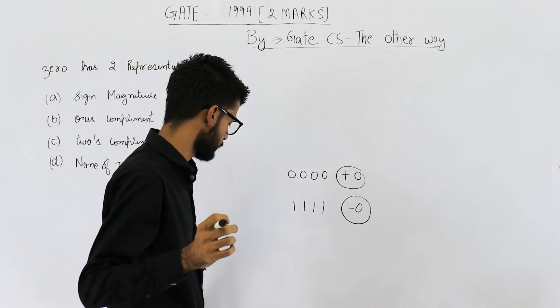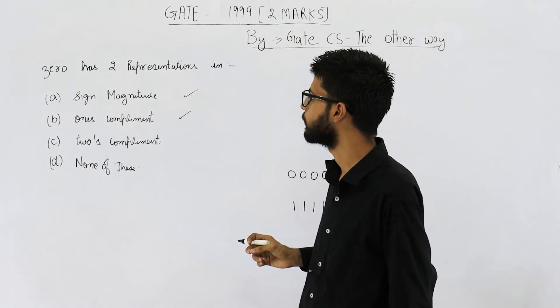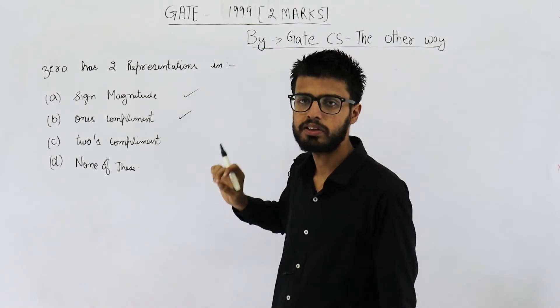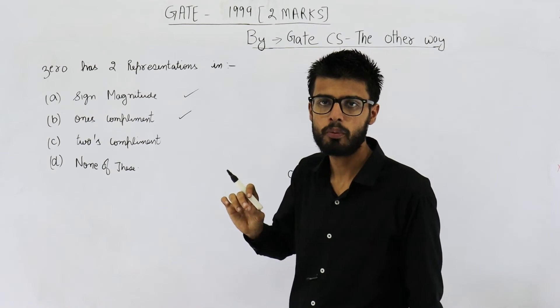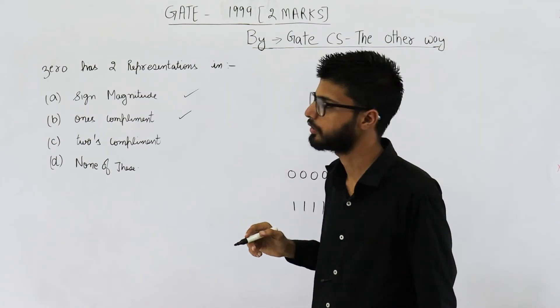That means answer to this question is sign magnitude form and one's complement. Two's complement does not have any wastage. That means each and every combination is assigned to a different number. So zero will have only one representation.